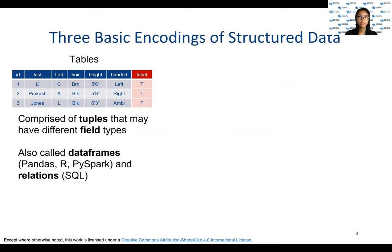Let's start with three basic abstractions of structured data. The data we spoke about on the previous slide is an example of tables or relations. Tables are available in most popular languages used in data science. In Python pandas, R, and PySpark, they are called data frames. A data frame is a table with positions on the rows and names on fields. Tables are also the fundamental concept in relational databases where they are called relations. A relation is a table but doesn't pay attention to order, so there are no positions on rows. We can assume that relations, data frames, and .csv files are all the same thing — tables.